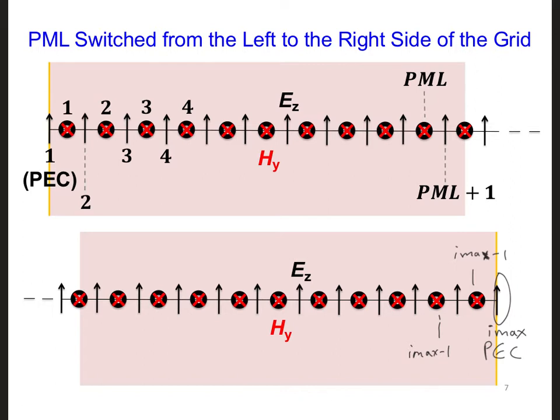Then since PML is equal to 10, we can label the indices of the field components on the left edge of the grid. This is a half a cell into the PML, and this will be Imax minus PML. And this will be Imax minus PML, or minus 10. You can count them across if you like.